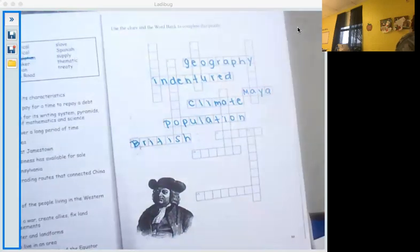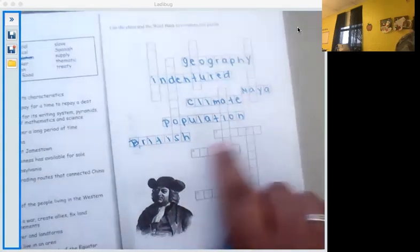Number 12. The amount of a product that a business has for sale. That is their supply.